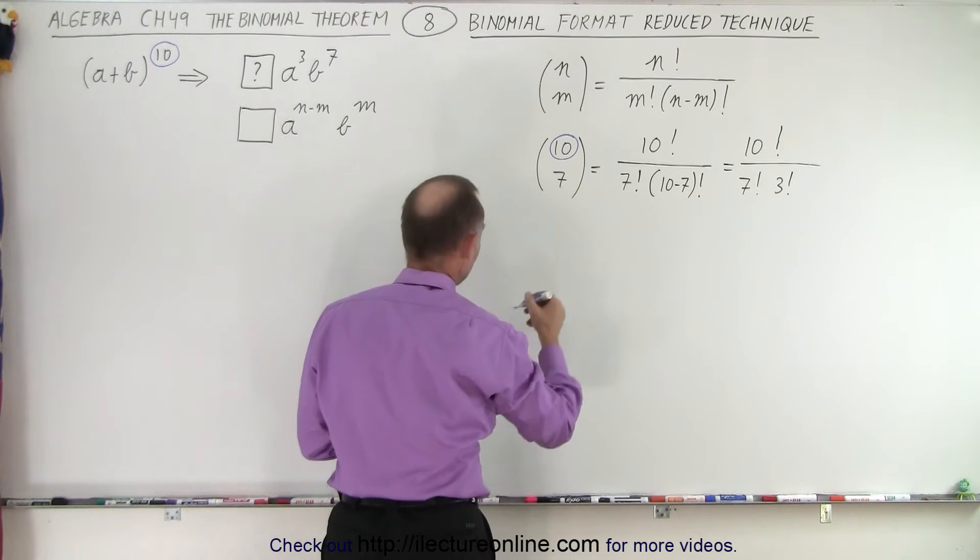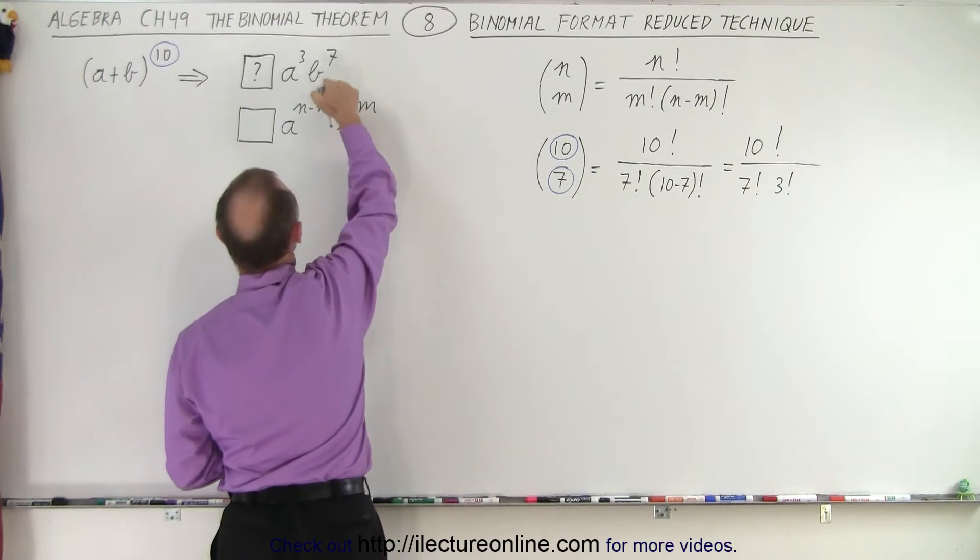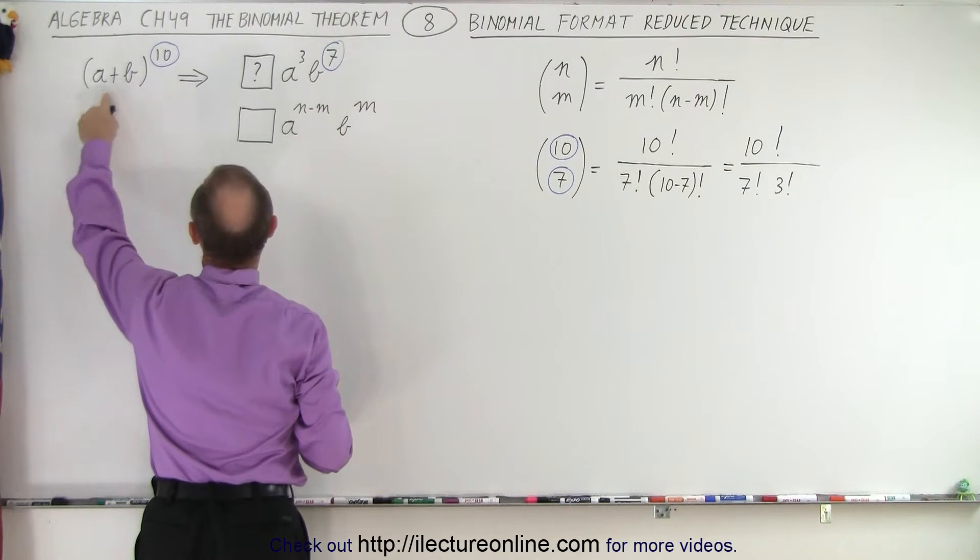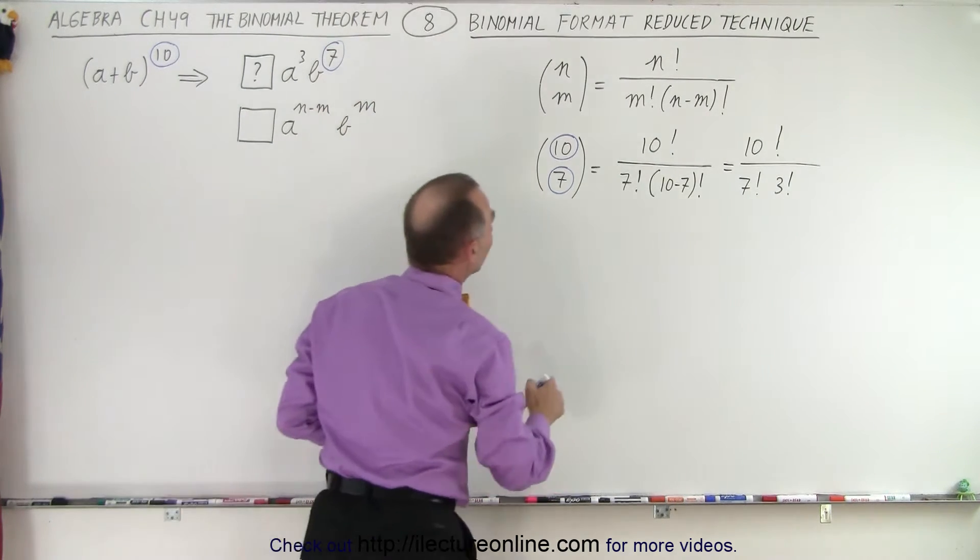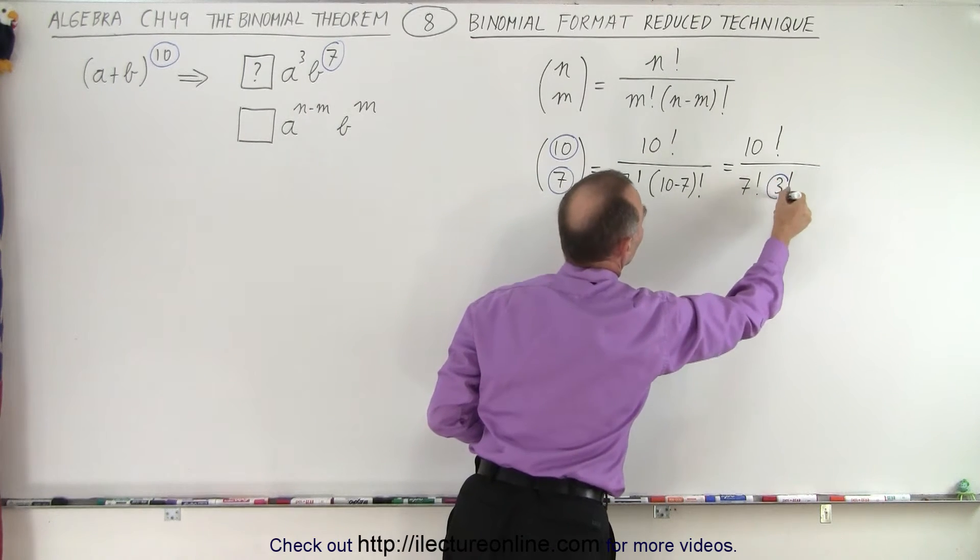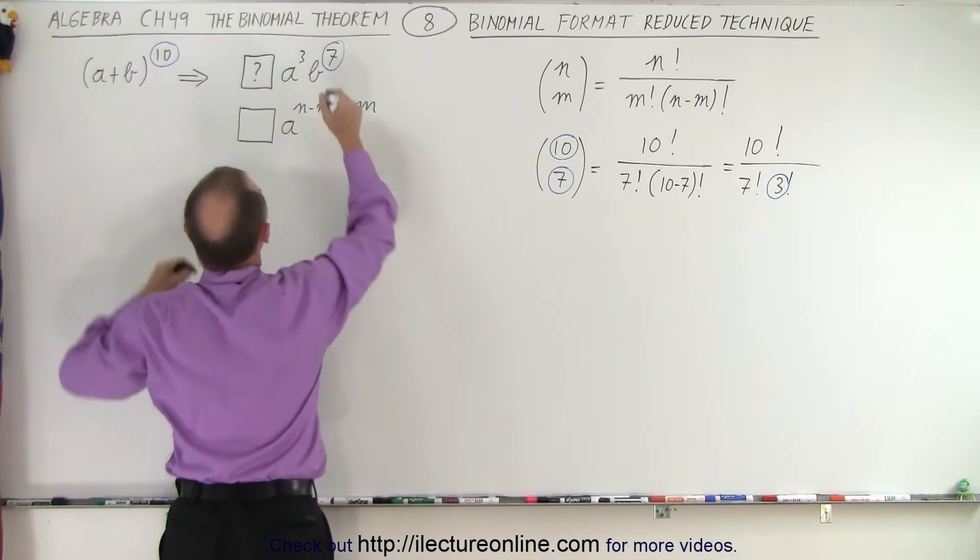Then the number at the bottom is the same number as the exponent of the second variable in the binomial. And then we have 10 minus 7, which is 3. This is the exponent of the first term in the binomial.